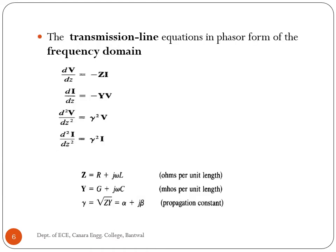Therefore, the four transmission line equations in phasor form in the frequency domain are: dV/dZ = −Z·I, dI/dZ = −Y·V, d²V/dZ² = γ²·V, and d²I/dZ² = γ²·I. Here Z = R + jωL is the impedance, Y = G + jωC is the admittance, and γ = √(Z·Y) = α + jβ is the propagation constant. R, L, G, and C are the primary constant parameters of the transmission line.